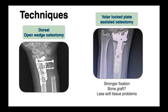With the advent of volar locking plates, the dorsal open wedge osteotomy can be performed from the volar side using these strong fixation constructs. The volar locking plate provides excellent fixation and can hold the osteotomy open for a longer time without fearing loss of reduction or collapse. This also allows the technique to be used without the need for bone grafting in select situations, and the plate being on the volar side is associated with less soft tissue problems.